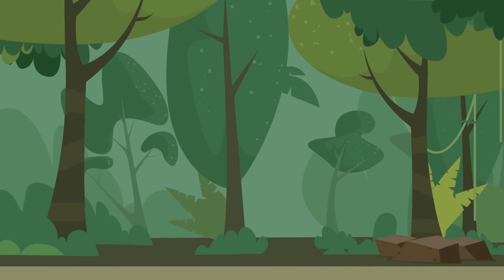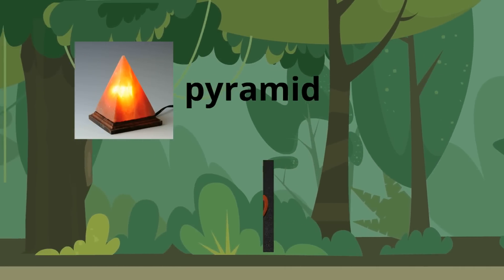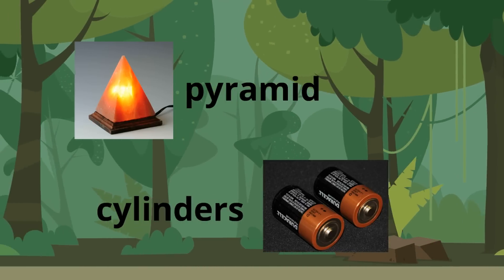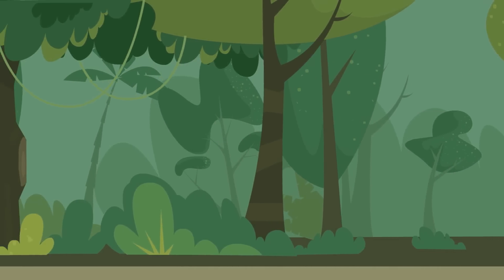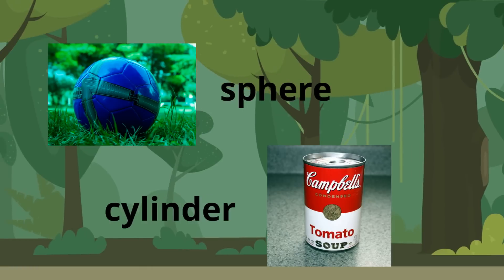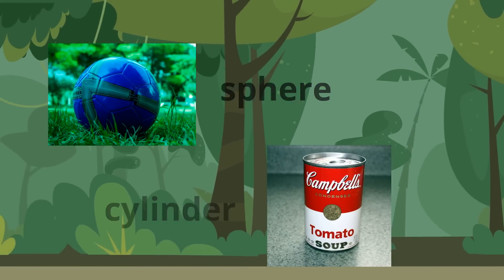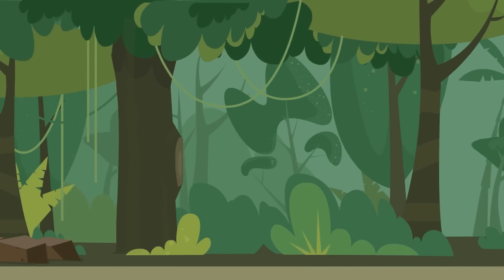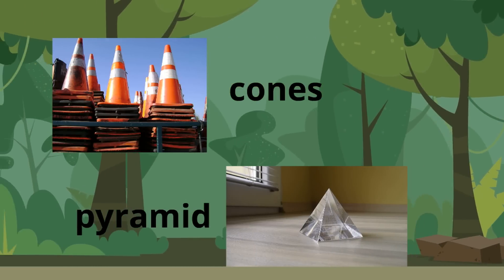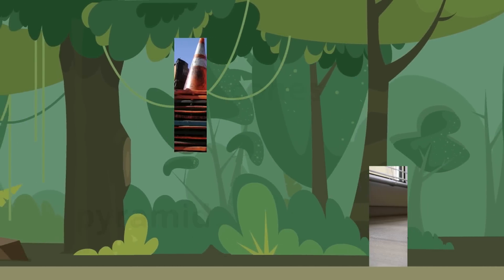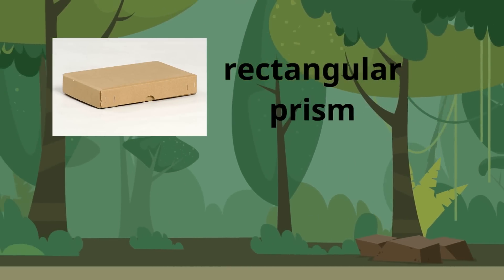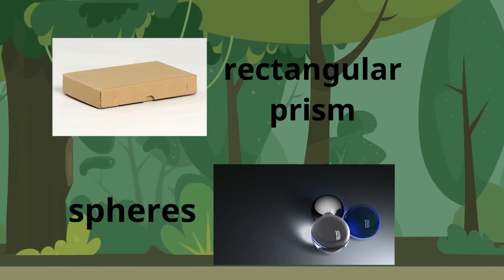Let's review! Can you identify these shapes? Pyramid... cylinders... sphere... cylinder... cones... pyramid... rectangular prism... spheres. Let's do some more!